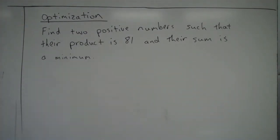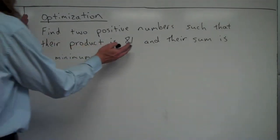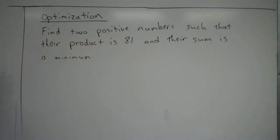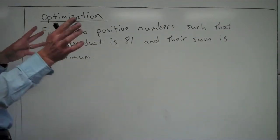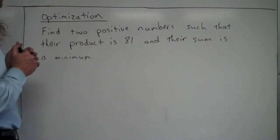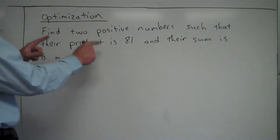So here's an example. In this case it says to find two positive numbers such that their product is 81 and their sum is a minimum. So the constraints come from the beginning of this sentence here, saying that we have to have two positive numbers, that's part of the constraint, such that their product is 81.